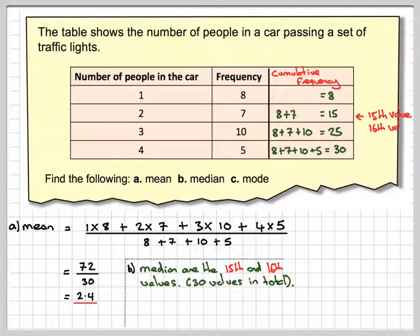But the 16th value would be a 3. Because if I put these in order of things, I'd have to write down 8 ones, followed by 7 twos, and the last two would be the 15th value. Then I'd have to write down 10 threes, and the first one of those would be the 16th value altogether, followed by 5 fours.